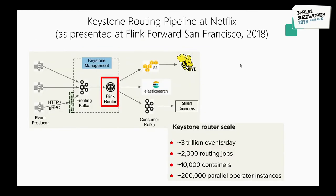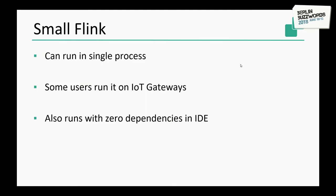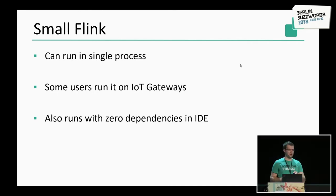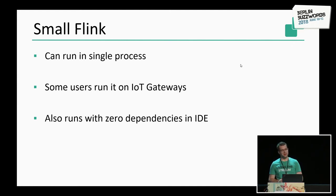The second example is Netflix. Their routing pipeline goes through Flink, and they are also a very big user with around 3 trillion events per day, over 2,000 jobs, lots of containers, and lots of parallel operators. But Flink does not have to be big — it can run in a single process on your machine. You won't get high availability, of course, but some users run it on IoT gateways, and for debugging it is very useful to run in your IDE.